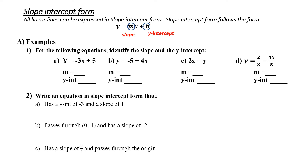Example A, number one. For the following equations, identify the slope and the y-intercept. Let's start with A: y equals negative three x plus five. Slope is the value in front of the variable, or the coefficient. In this case, that's negative three. The y-intercept is the constant. In this case, that's five. Stop the recording now and try b, c, and d, and I will do them in a minute.